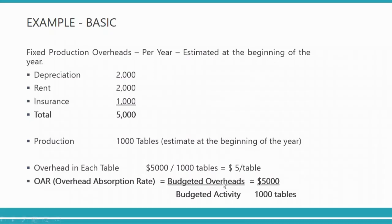Absorb means that you add overhead into your cost based on some estimate. The OAR formula is: budgeted overheads divided by budgeted activity. So five thousand dollars divided by one thousand tables gives five dollars per table — or five dollars per unit. That is a very simplified example.